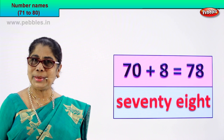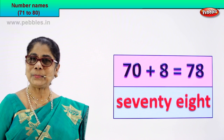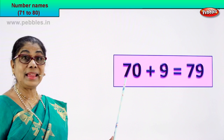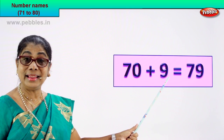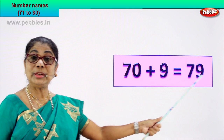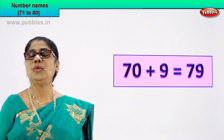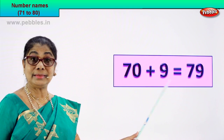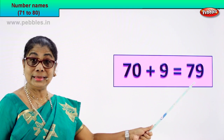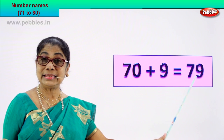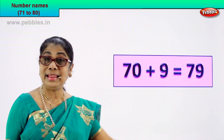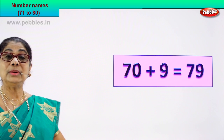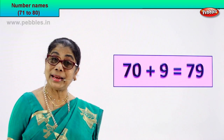Shall we go to our next number? 70 plus 9 is equal to 79. How do we get 79? 70 plus 9 is equal to 79. 7 and 9 — 79 is the numeral.